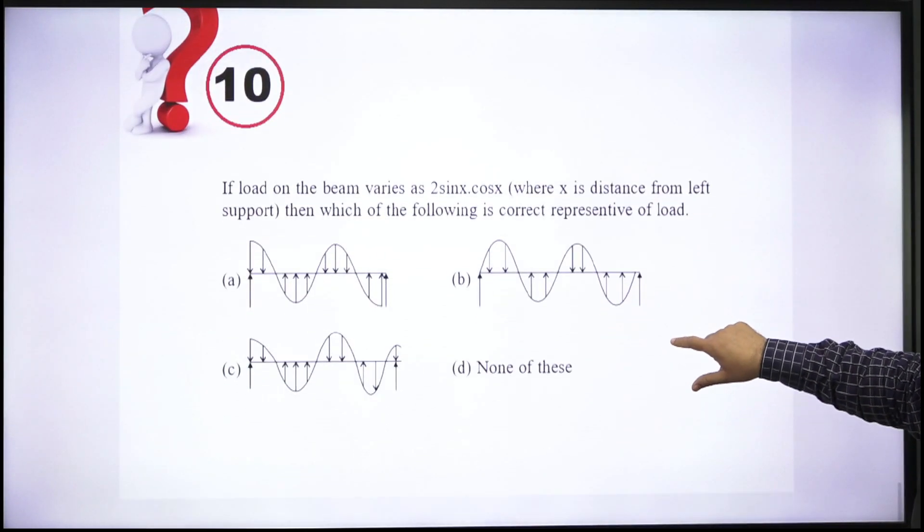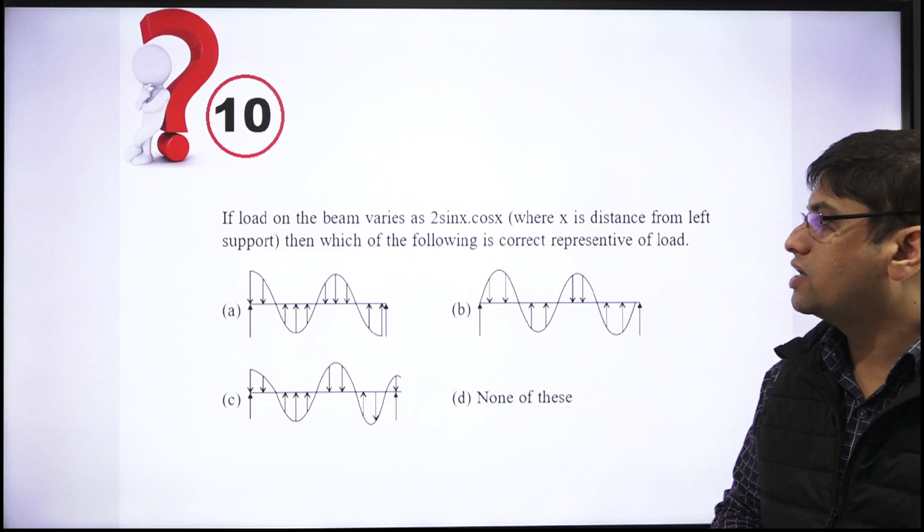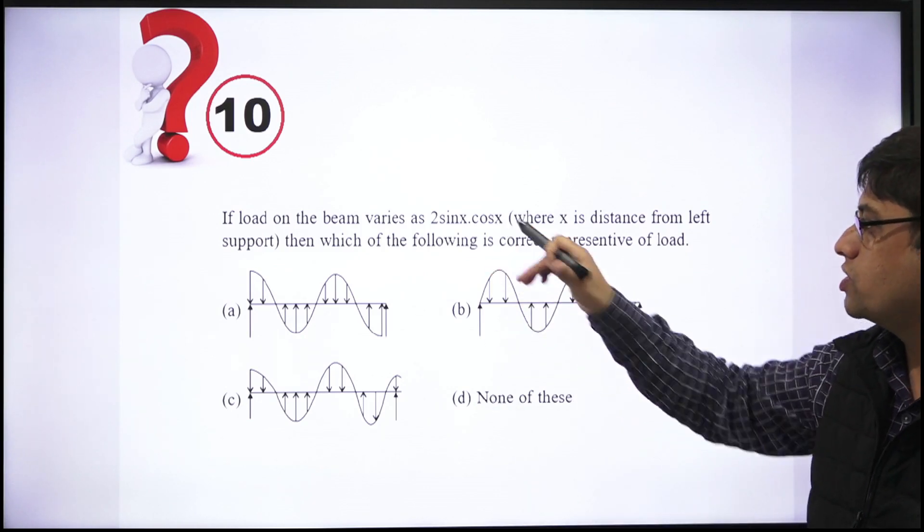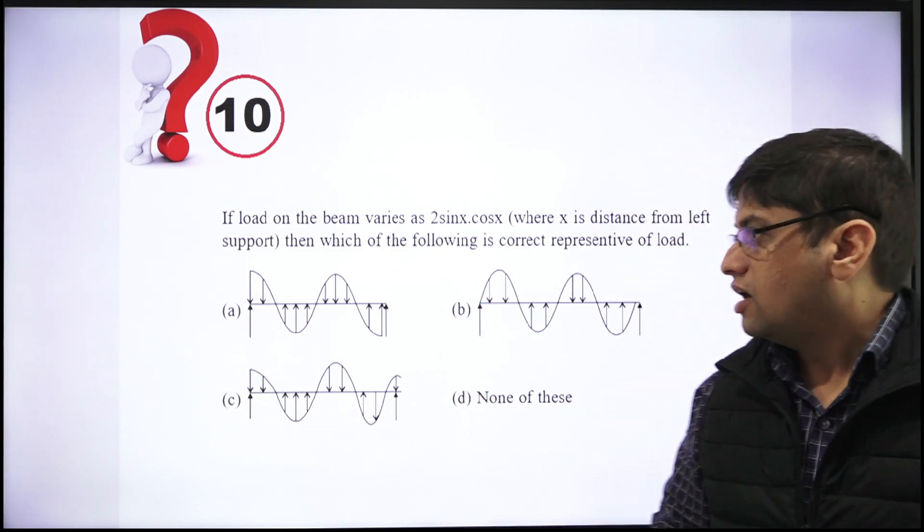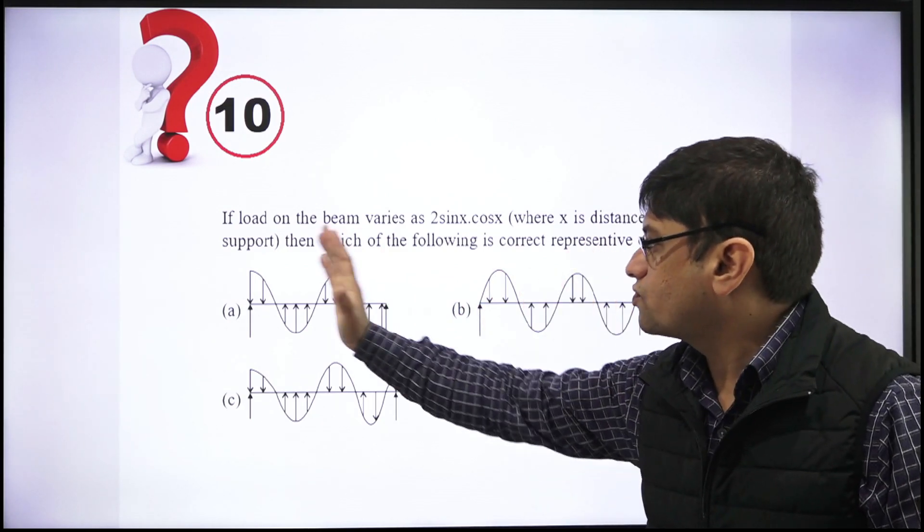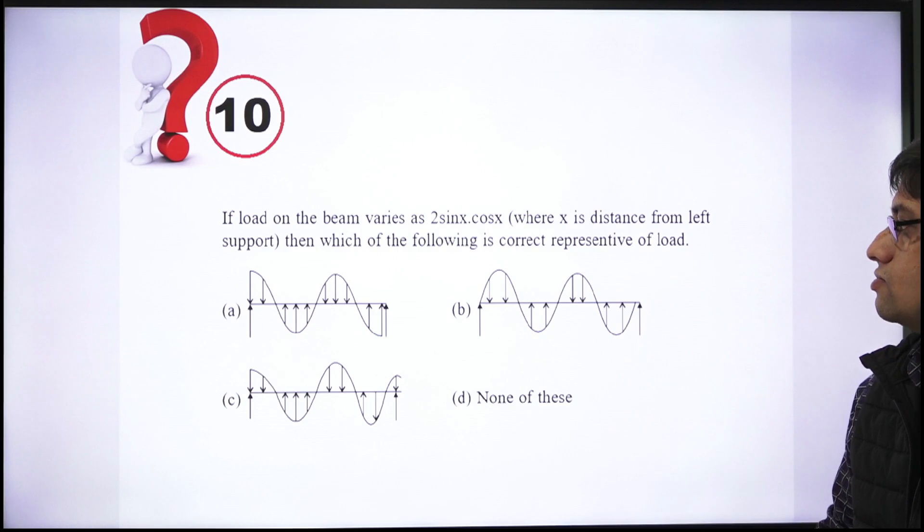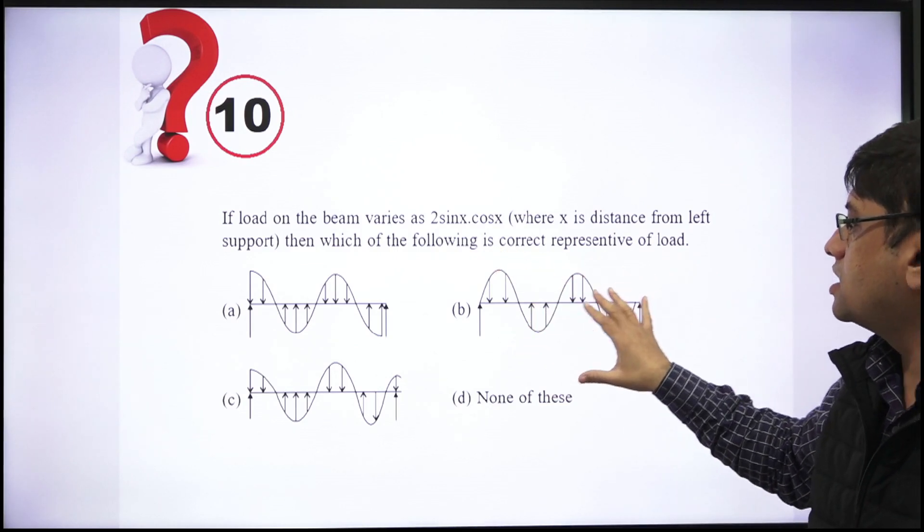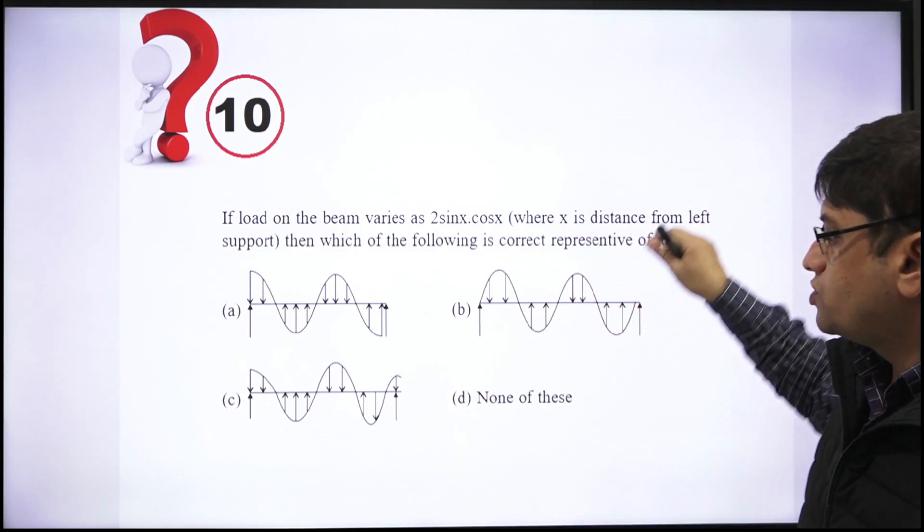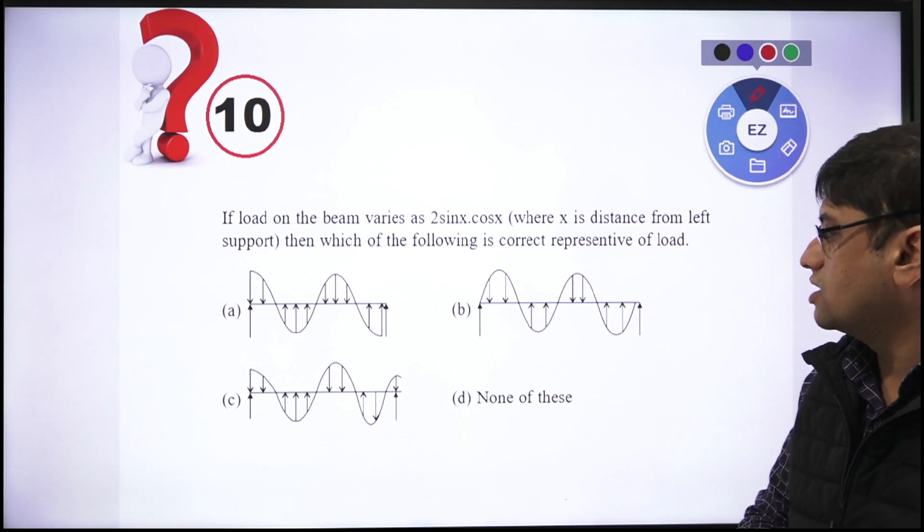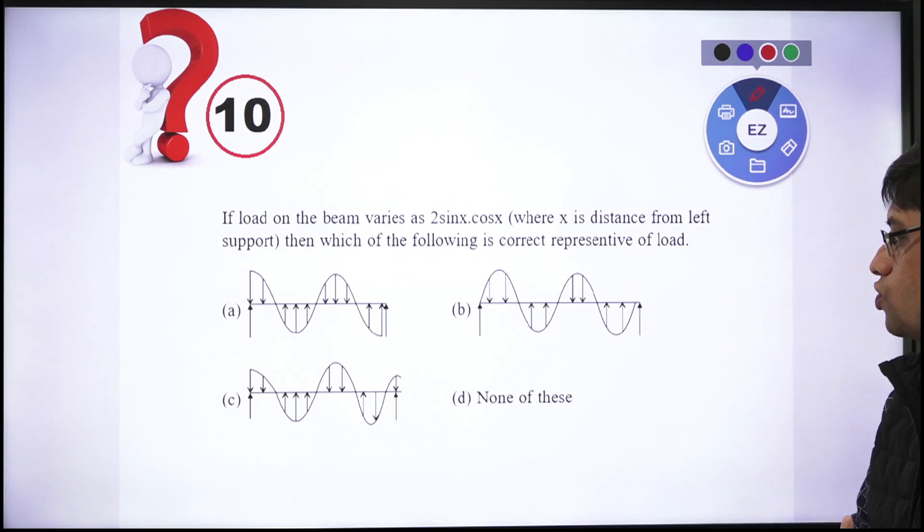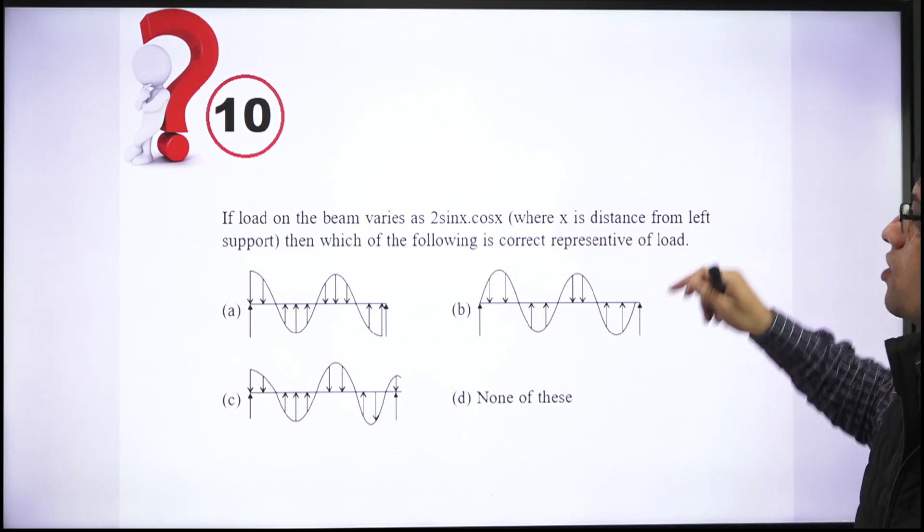Last question: There is a load given on the beam. The equation for that—the loading equation—is 2 sine X cos X given on the beam, where X is the distance from the left side. You have to tell which one is the correct representative of the load. Which one is the correct representative of the load, you have to tell that. This is the question given to you in this particular case. I think there are some good questions.